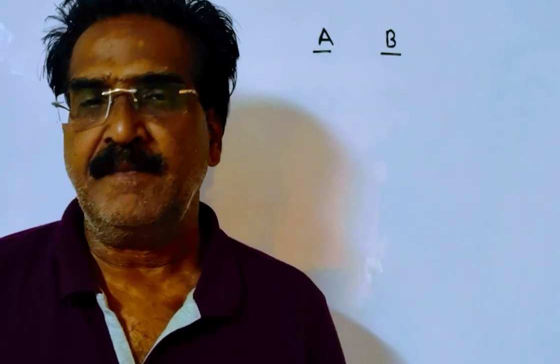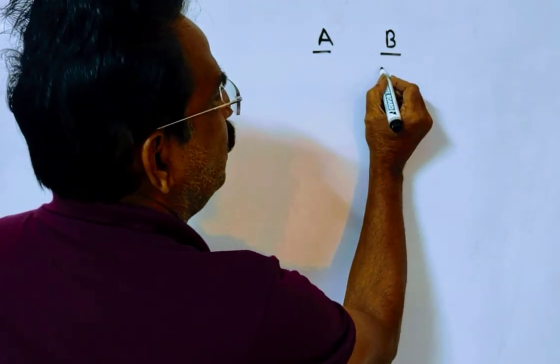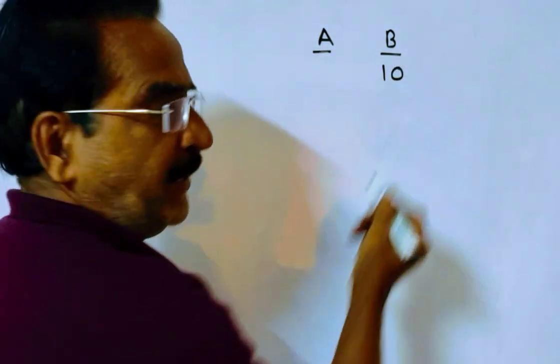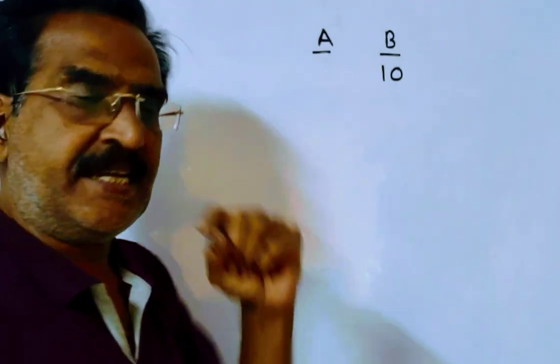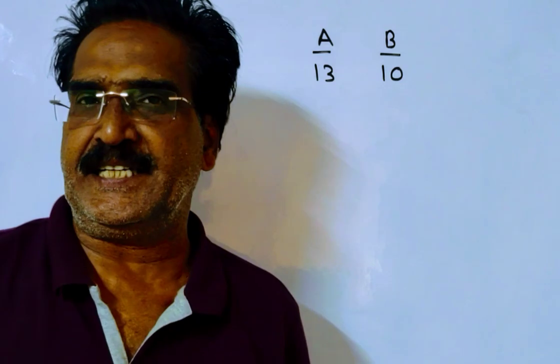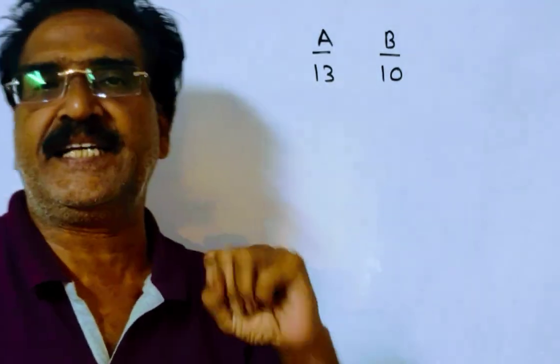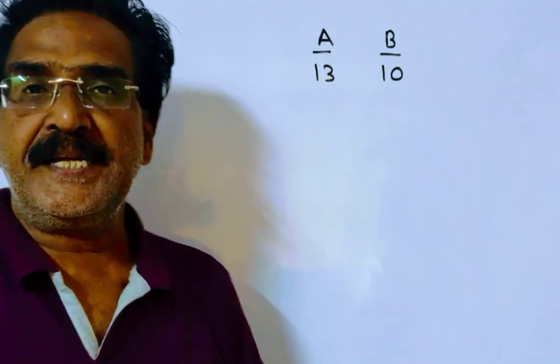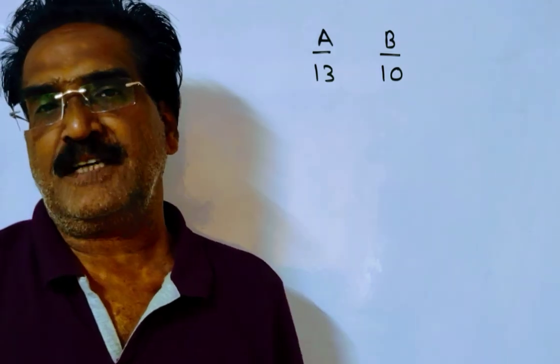A is 30% more efficient than B. What does it mean? If B can do 10 units of work per day, then A can do 13 units of work per day - 30% more efficient. So, 30% of 10 is 3. Therefore, A can do 13 units of work per day.